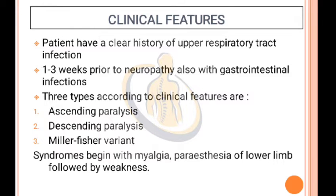Clinical Features: Patients have a clear history of upper respiratory tract infection one to three weeks prior to neuropathy, with involvement of gastrointestinal infections. Three types based on clinical features are: Ascending Paralysis, Descending Paralysis, and Miller-Fisher variant. Syndromes begin with myalgia, paresthesia of the lower limb, followed by weakness.